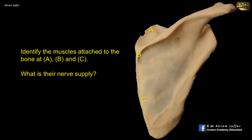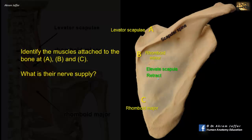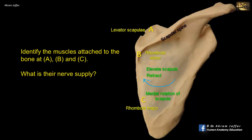Identify the muscles attached to the bone at A, B, and C — what is their nerve supply? These muscles connect the medial border of the scapula to the cervical and upper thoracic spine. They are: levator scapulae at the superior part of the medial border, rhomboid minor at the root of the scapular spine, and rhomboid major inferior to the scapular spine. All three muscles elevate, retract, and medially rotate the scapula so the glenoid cavity faces downward. All three are supplied by the dorsal scapular nerve from the upper trunk of the brachial plexus.